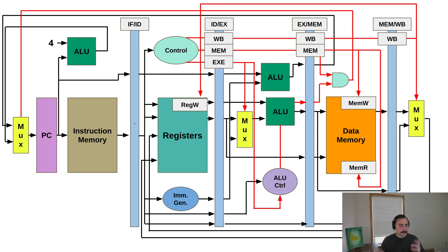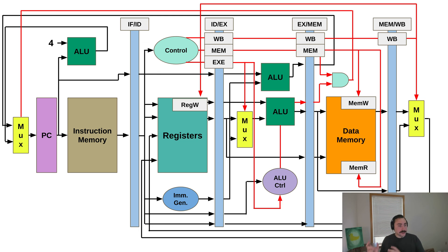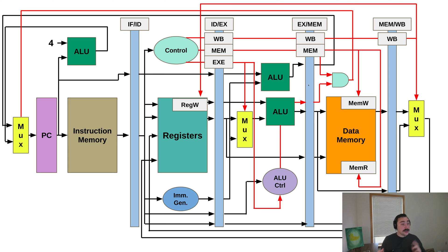Separating these different stages, we have pipeline registers. The idea behind these pipeline registers is that they hold the information an instruction needs to coordinate the different components as it moves through the pipeline stages. So they save things like control signals, values read out of a register, or results — say, of an ALU op. If it's an R-type, the result of something like an add will get saved to our pipeline register so it can be used later in the writeback stage when writing back into the register file.